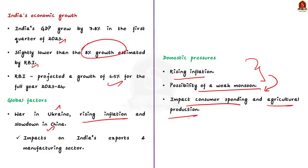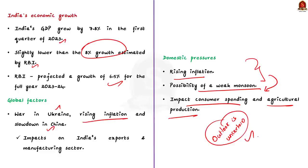The article says that the economic growth of India's different sectors in the first quarter of 2023 was quite mixed. The farm sector and services sector grew well, but manufacturing and private investment are struggling. Overall, the outlook for India's economic growth in the coming months is uncertain, however the government and the RBI are taking steps to mitigate the impacts of global and domestic pressures.